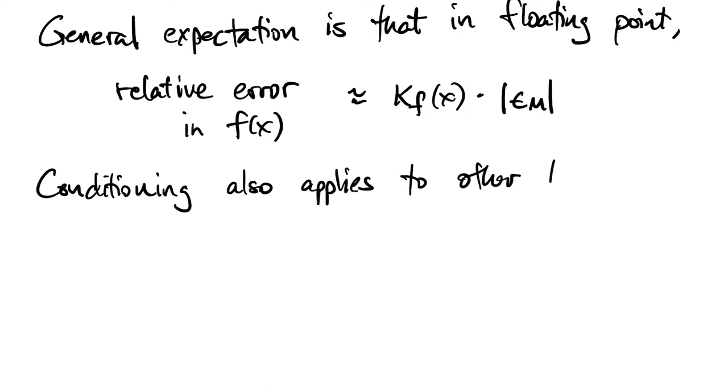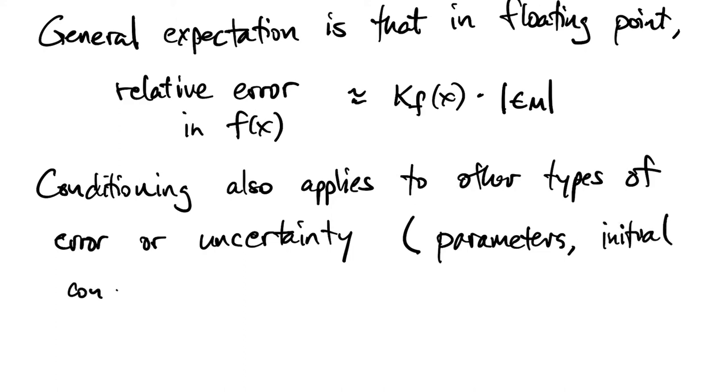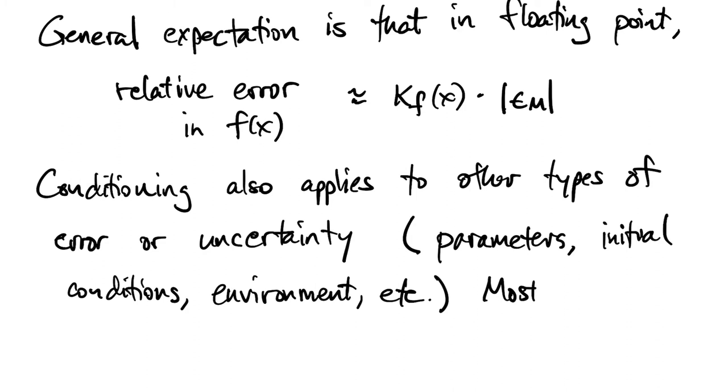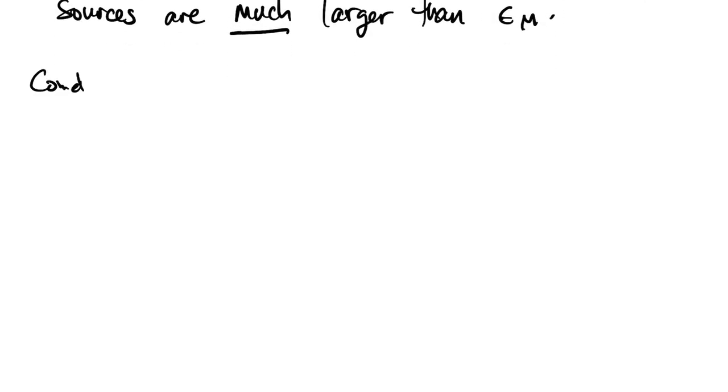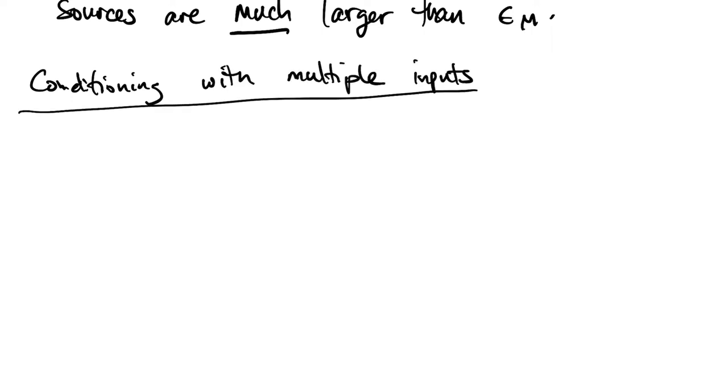So in the idealized world of math, we may not have to worry about that. But in science and engineering, we hardly ever know anything precisely. Even the physical constants that we know usually aren't known anywhere nearly as far out as 16 digits. In most problems, you might be lucky to have a few percent error on some parameters.